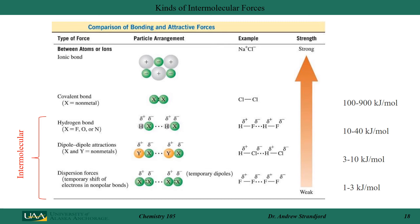Let's compare the strength of the three intermolecular forces. Dispersion forces — the temporary attraction between dipoles — are about 1 to 3 kilojoules per mole. Dipole-dipole attractions are typically between 3 and 10 kilojoules per mole. Hydrogen bonding is somewhere between 10 and 40 kilojoules per mole. So hydrogen bonding is the strongest, followed by dipole-dipole, with dispersion forces being weakest. Compared to covalent or ionic bonds, which range from 100 to 900 kilojoules per mole, intermolecular forces are much weaker — easily broken by increasing temperature or changing pressure.